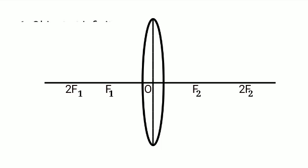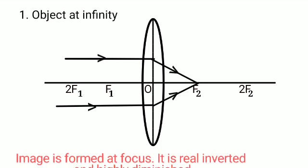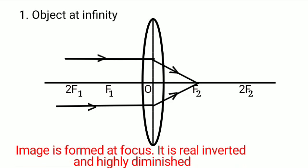Number one, when the object is placed at infinity, all the incident rays after refraction will be meeting at a point F. Therefore, the image will be formed at F. It is real, inverted and highly diminished.